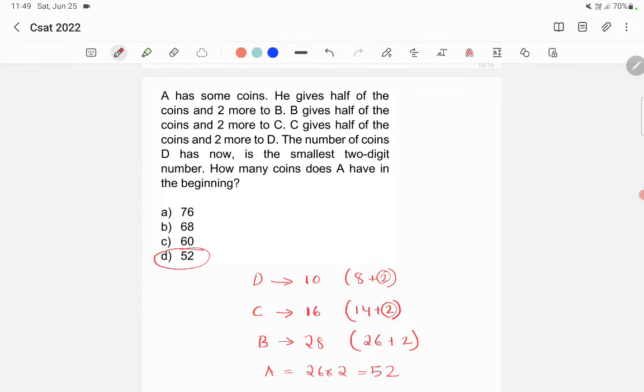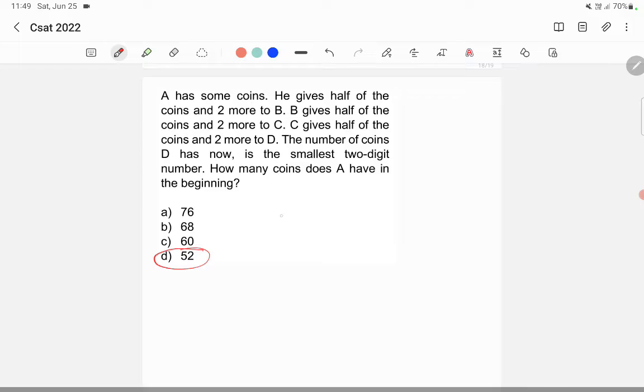This is one way of doing this question. Another way is you can use the options and solve this. Let's say we are taking option A first. Option A is 76. Now let's say A has 76 coins. Then how much will B be having? B will be having half of the 76 plus 2 according to the question. So how much will this come? 76 by 2 is 38 plus 2 is 40. Now how much does C have? 40 by 2 plus 2.